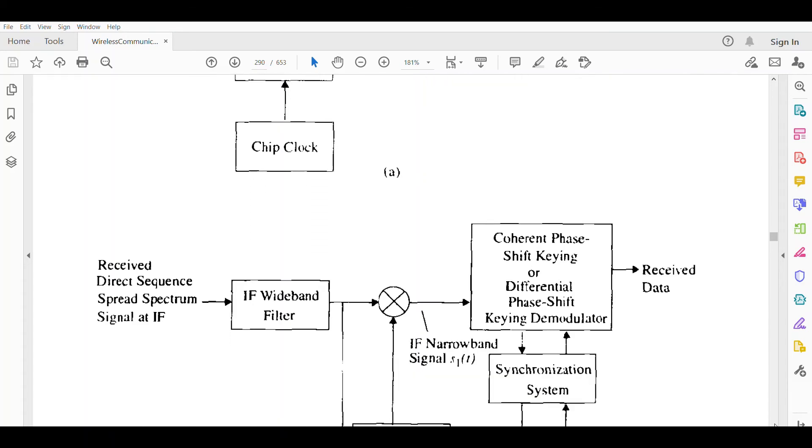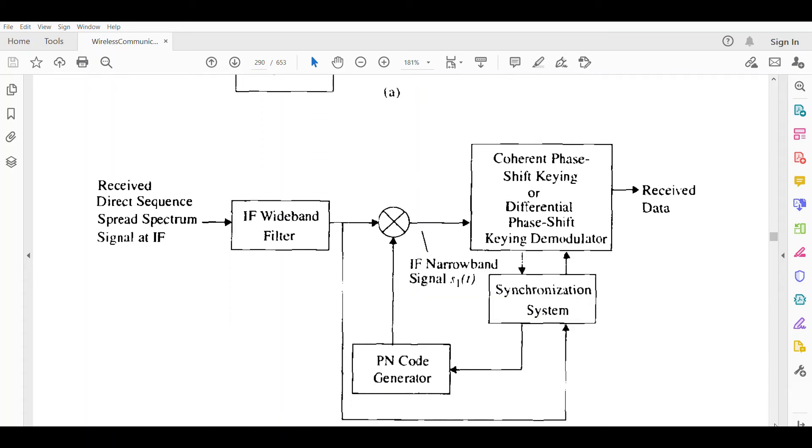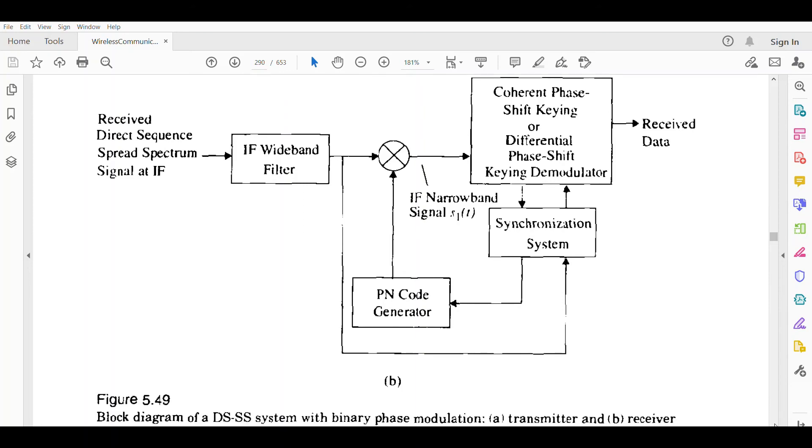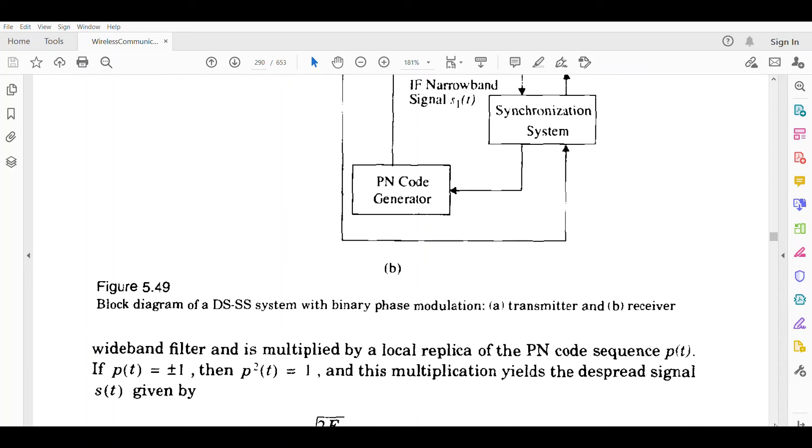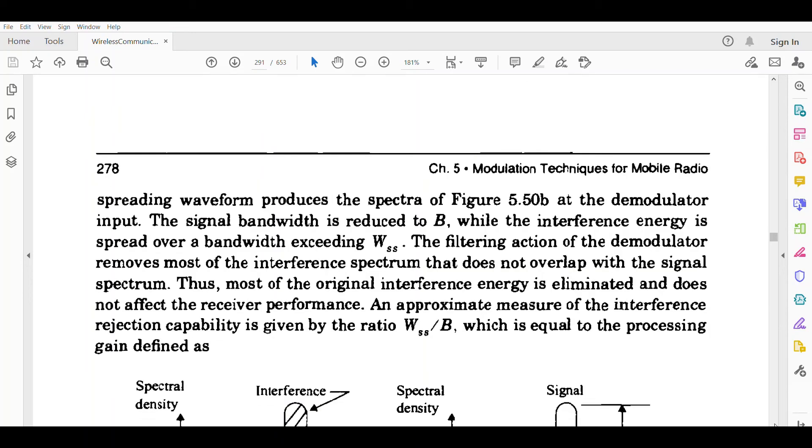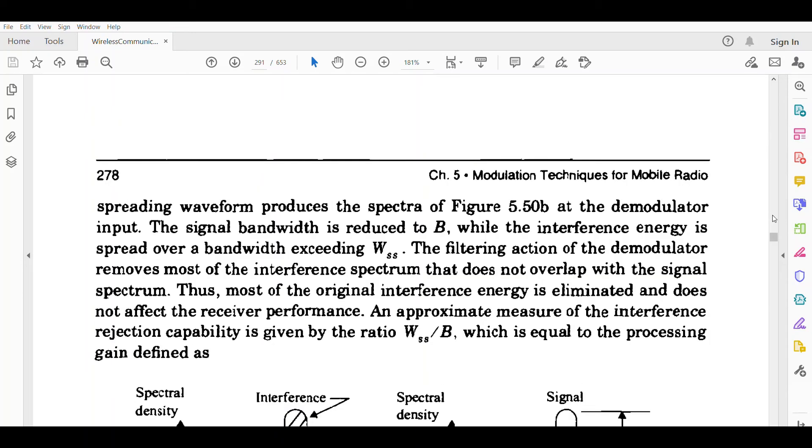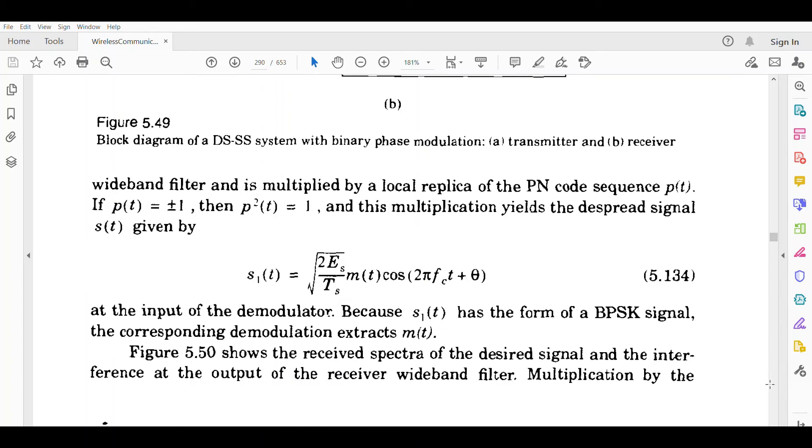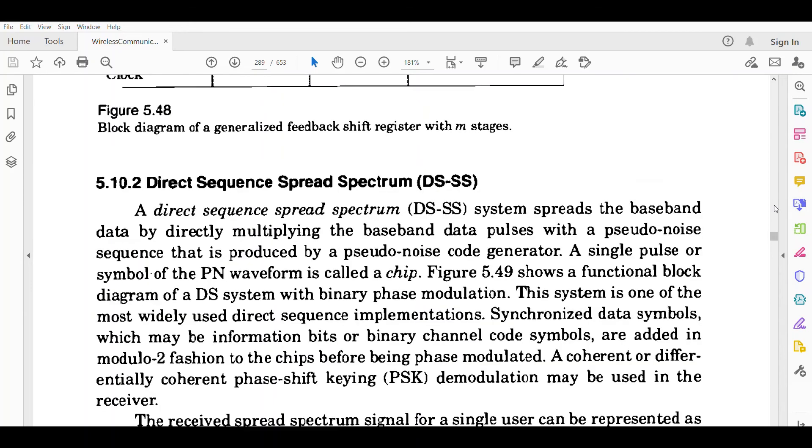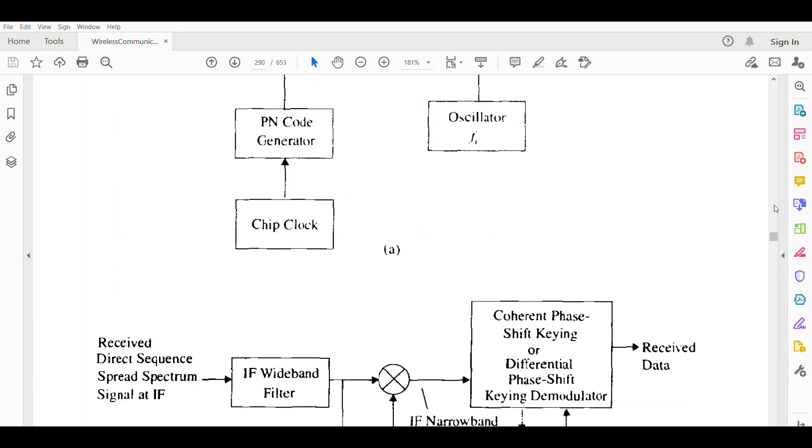The DS receiver diagram is shown here. You can see the chip clock, PN code modulates the message, bandpass filter, oscillator - that gives the transmitted signal. The received signal is the same. We use a lowpass filter, PN sequence generator to demodulate and recover the message. You can see the diagram - data, PN code - one can see the panel status and timeline. We can read this diagram as well.